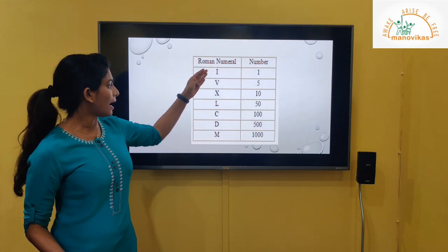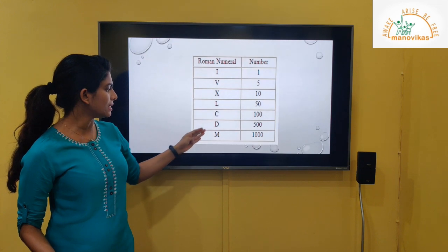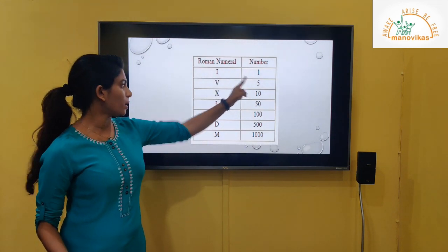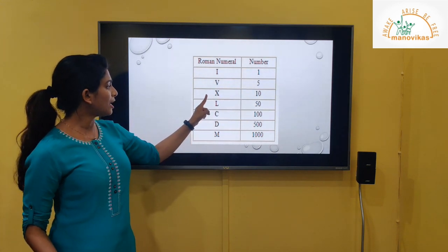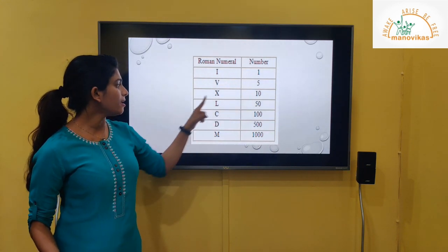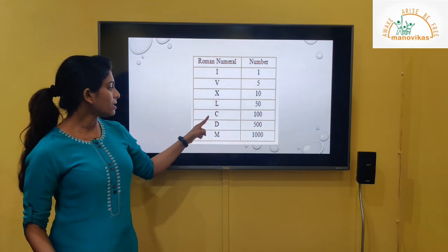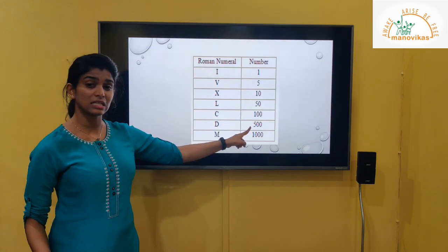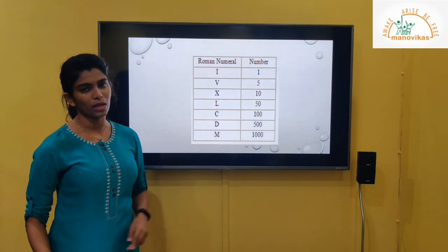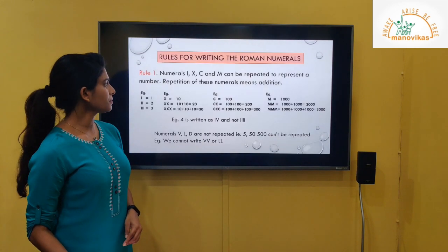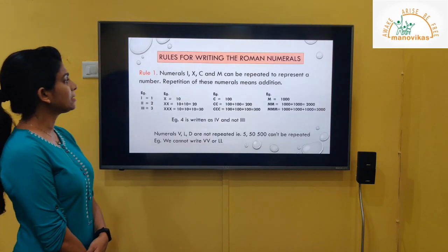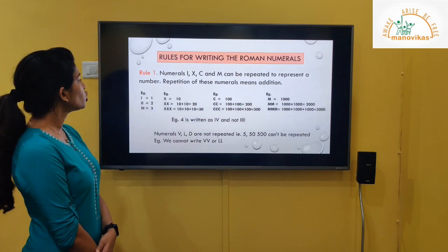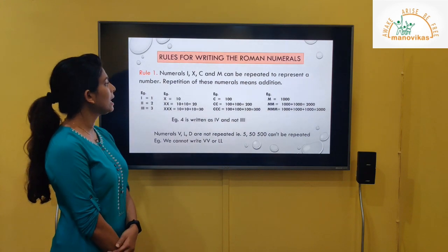There are seven Roman numerals, written with the letters I, V, X, L, C, D, M. Their values are: I is 1, V is 5, X is 10, L is 50, C is 100, D is 500, and M is 1000. There are a few rules for writing Roman numbers.